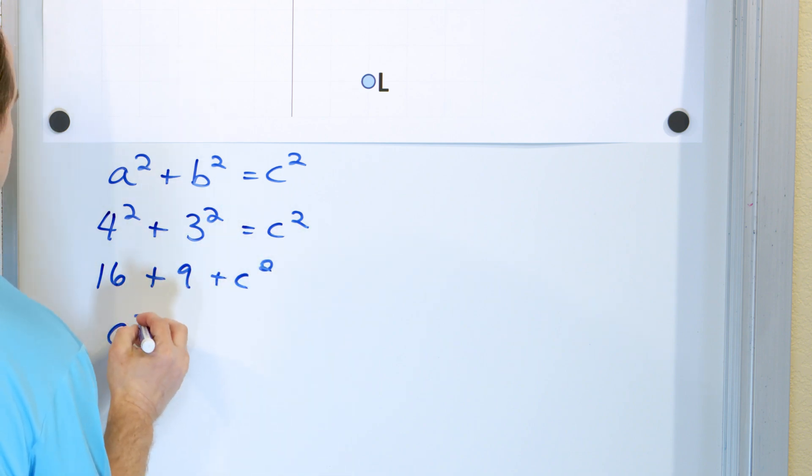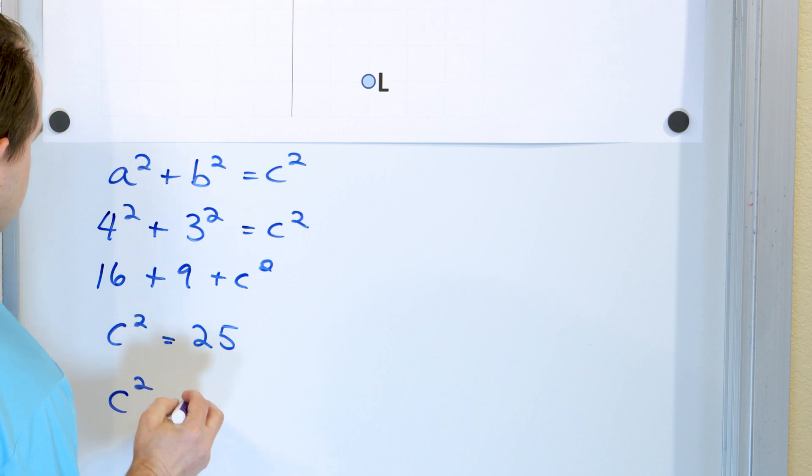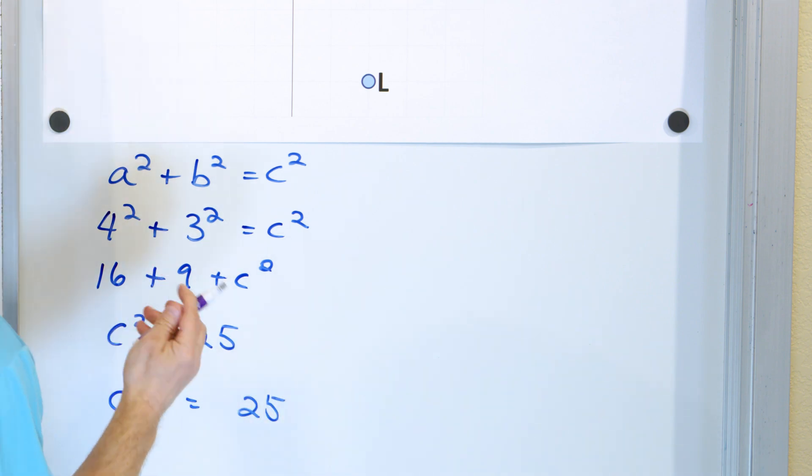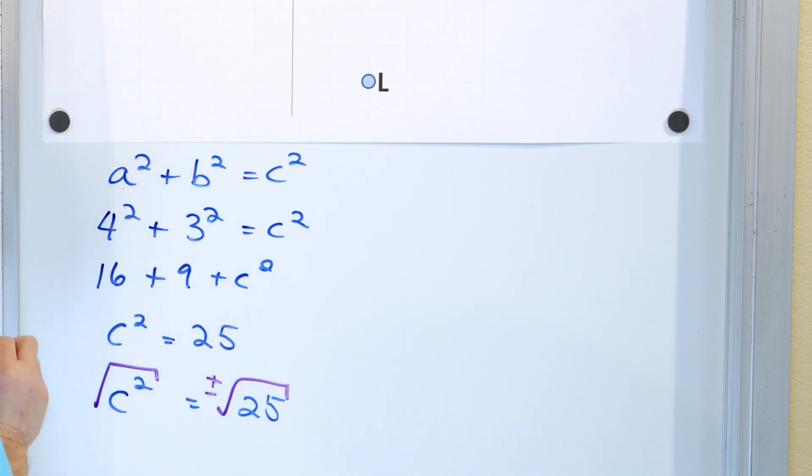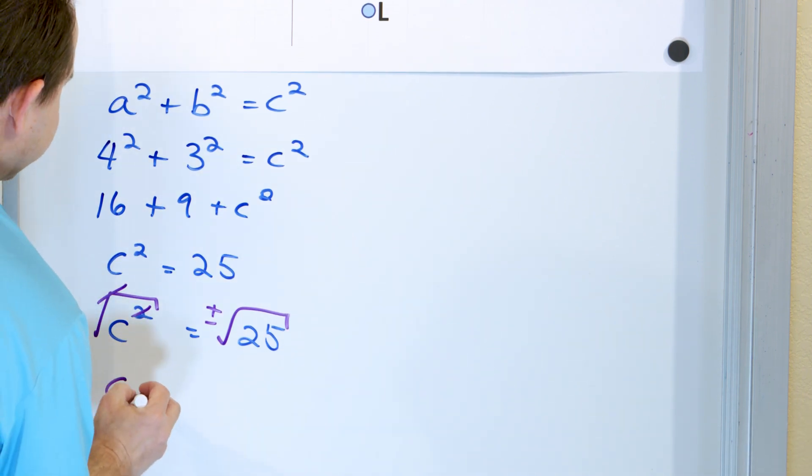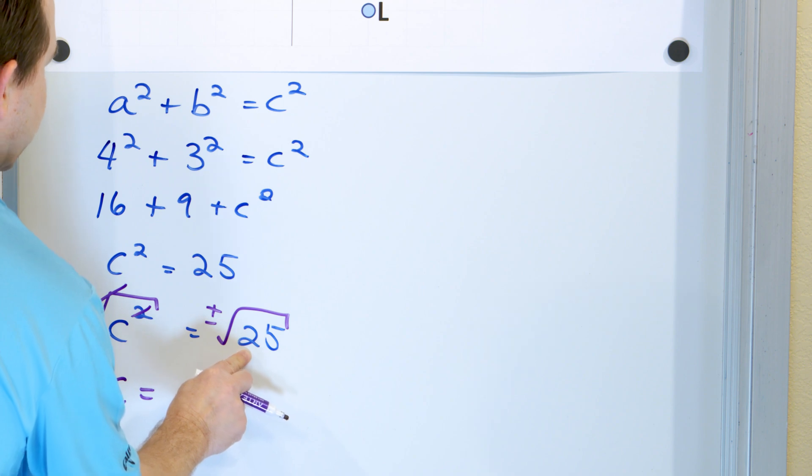And then I know that four times four is 16, and I know that three times three is nine. And if I flip it around and put c squared here, then the 16 and the nine is 25. And how do I get rid of this? Well, I say c squared is equal to 25. So if I want to get rid of this square, I have to do the opposite, the square root.